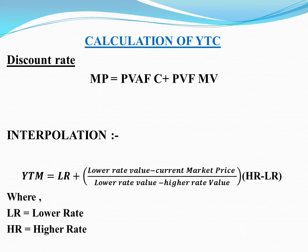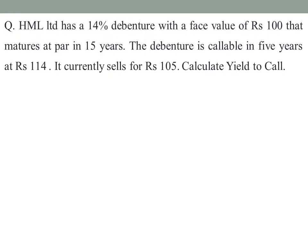We will now move on to an example. HML Limited has a 14% debenture with a face value of Rs. 100 that matures at par in 15 years. The debenture is callable in 5 years at Rs. 114. It currently sells at Rs. 105. Calculate the yield to call.